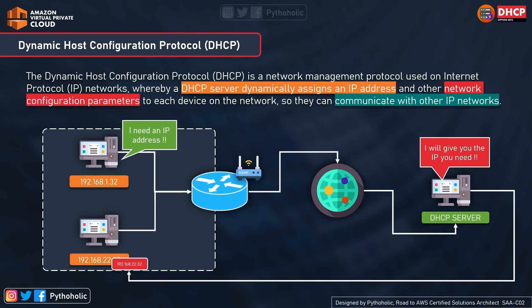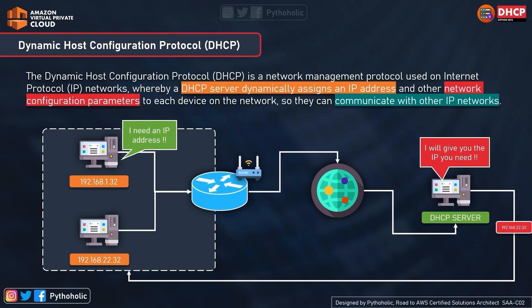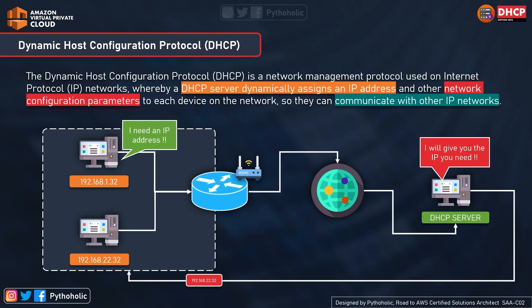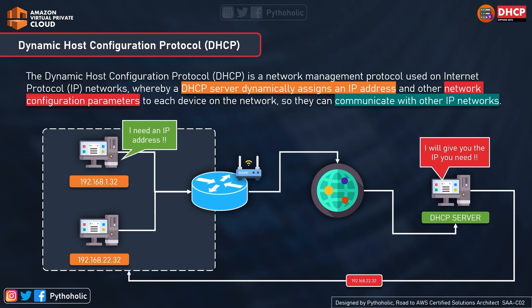The DHCP server dynamically assigns an IP address and other network configuration parameters to each device so they can communicate with other IP networks. The ISP has a connection to the DHCP server which can fetch an IP from its free IP pool. That is why we see the concept of BYOD, or Bring Your Own Device — with DHCP, it's very easy to configure devices. Without it, you'd have to manually configure IPs, which is a big overhead for network administrators.